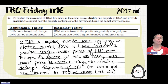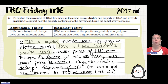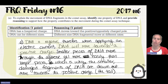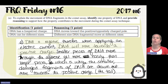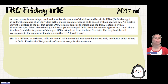The student answer states: DNA is negatively charged; therefore, when applying an electric current, DNA will move towards a positive charge. Smaller pieces of DNA move through the agarose gel more easily than larger pieces, which is why the smaller damaged fragments of DNA are drawn out further towards the positive charge, forming the tail.